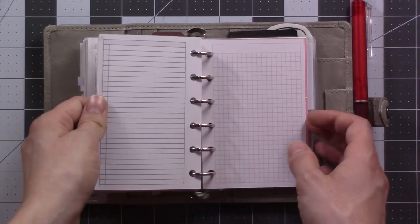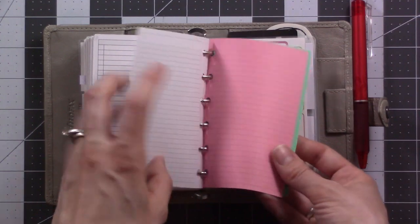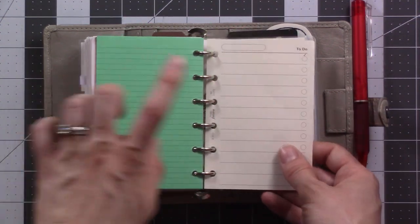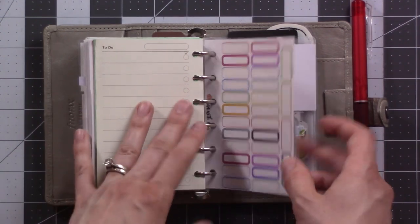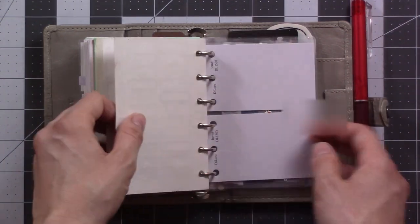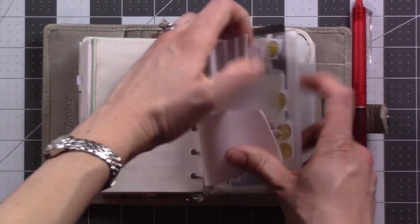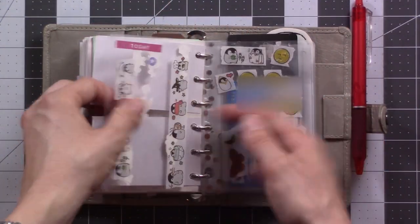I've got like some lines, like checklists, some grid paper, some colorful line paper, this Filofax to-do list, which like, I don't know. And then a couple of things with stickers on them, jot pads, some more stickers, washi tape.